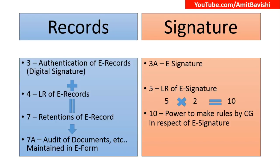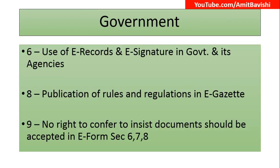Section 4 is legal recognition of electronic records, Section 5 is legal recognition of electronic signatures. Then the next question — what about Section 6? Section 6 deals with the use of electronic records and electronic signatures in government and its agencies. Section 7 was retention, Section 8 is the publication of rules and regulations in the eGazette. So Section 6 says e-records and e-signatures must be used; Section 8 says the eGazette must be used to publish all rules and regulations. Section 9 says that just because the government has the power to use these, that doesn't mean that people have the right to insist that the government must accept documents in electronic form. It is a kind of protective section — you can do it, but that doesn't mean you have to insist upon us.